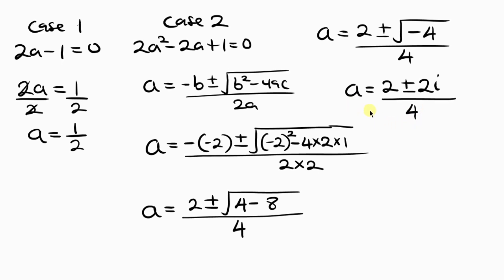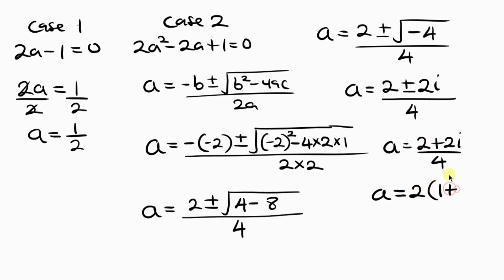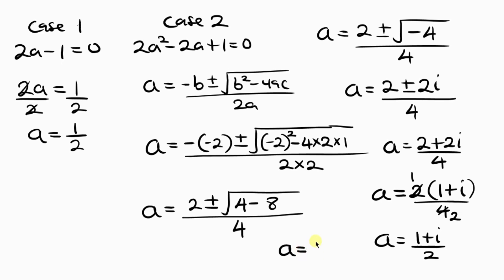We can separate this. Taking the positive case first: 2 plus 2i over 4. Factoring 2 from the numerator: 2 times 1 plus i, all over 4, which simplifies to 1 plus i all over 2. So another value of A is 1 plus i over 2. The last value of A is the same but with the opposite sign: 1 minus i all over 2.